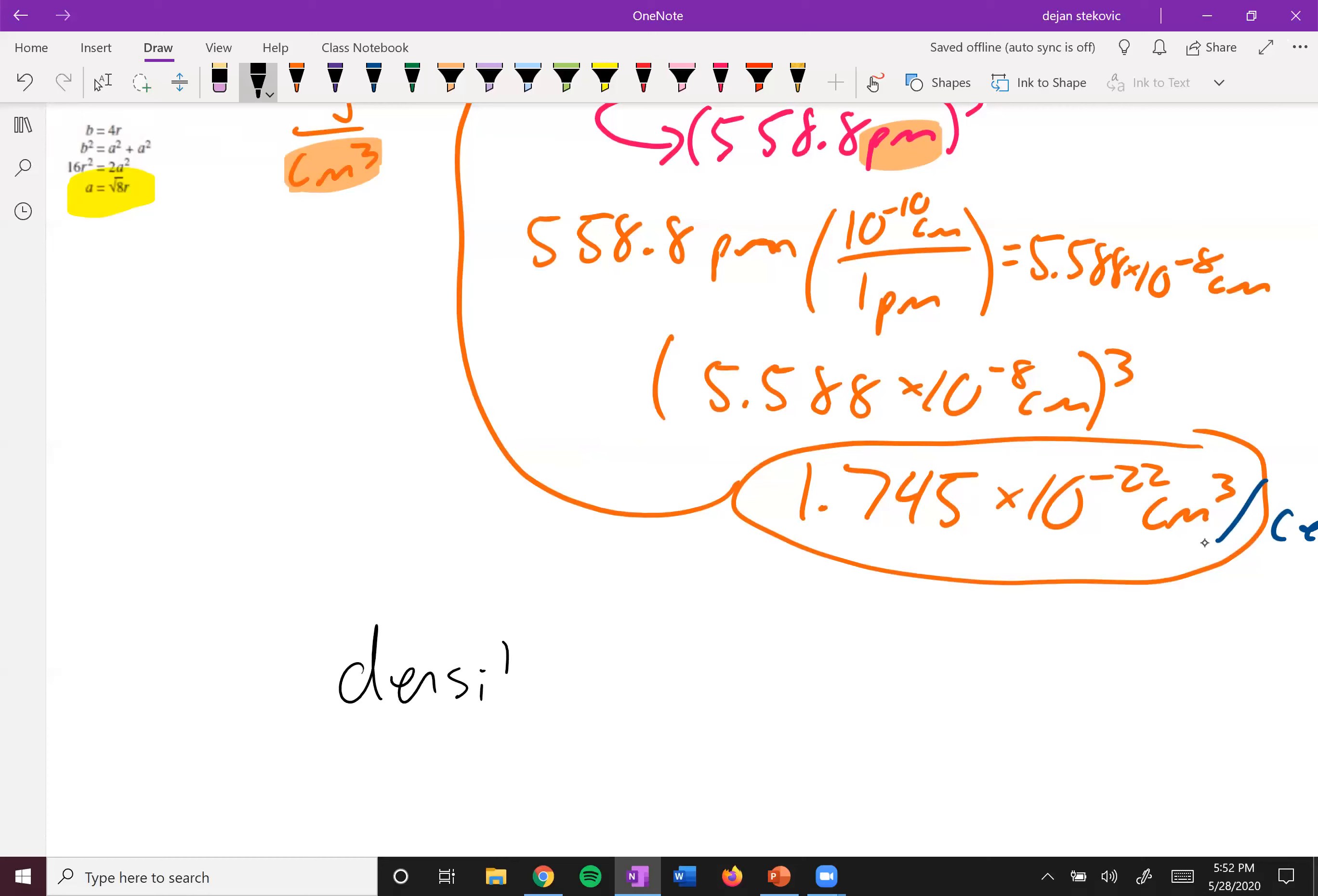divide it by your volume, and then you'll get a final answer of a density of 1.53 grams per centimeter cubed.